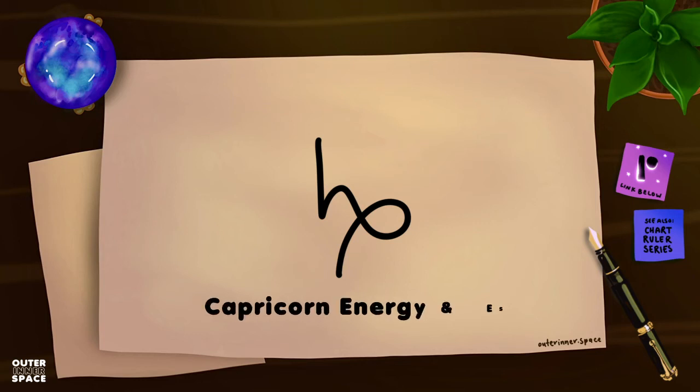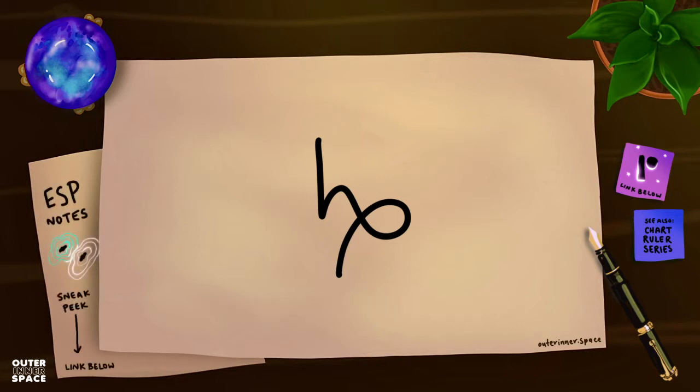Hey, it's Nicole from Outer Inner Space, and this video is about Capricorn energy and ESP—how extrasensory perception can manifest for Capricorn energy. You can watch this for any Cap placements, for 10th house energy, or wherever Capricorn is in your natal chart, because we all have all 12 zodiac signs in our natal chart.